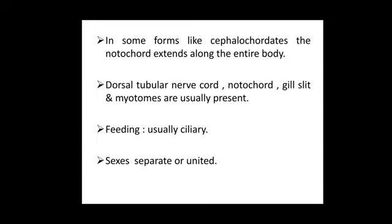In some forms like cephalochordates, the notochord extends along the entire body from top to bottom. The dorsal tubular nerve cord, notochord, gill slits, and myotomes are usually present. Myotomes are blocks of muscles usually present in the organism.